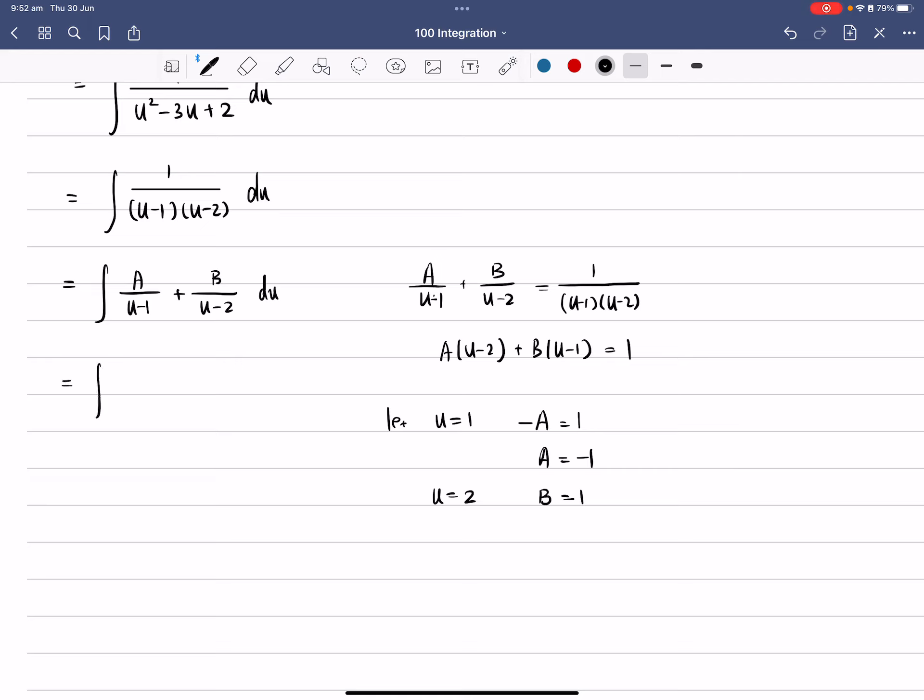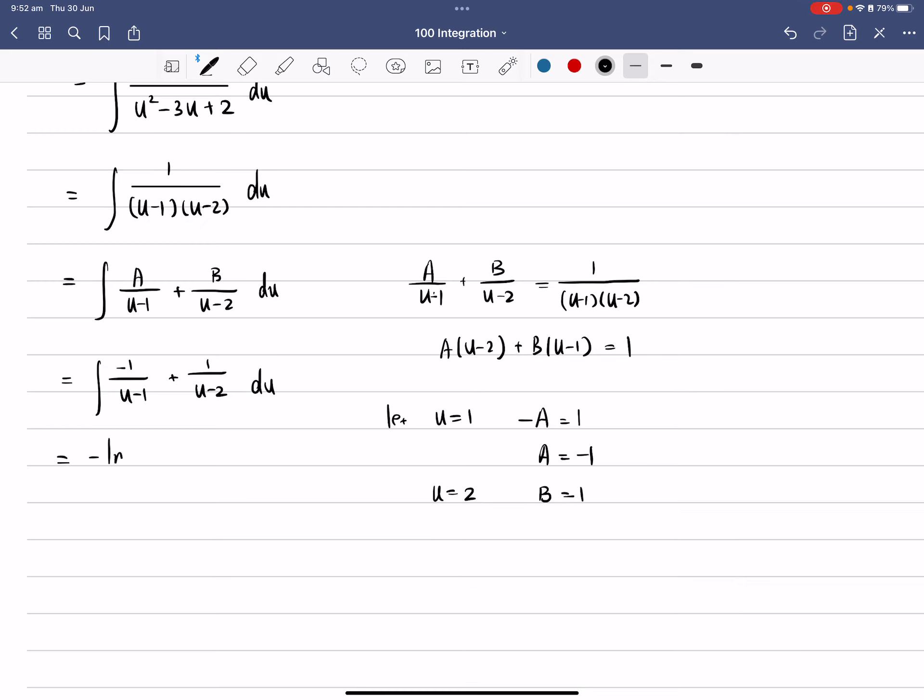Okay, so that should give us -1 over (u - 1) plus 1 over (u - 2) du. So from here, we should be able to just use a log to integrate. So that gives us -ln|u - 1| + ln|u - 2| + c here.